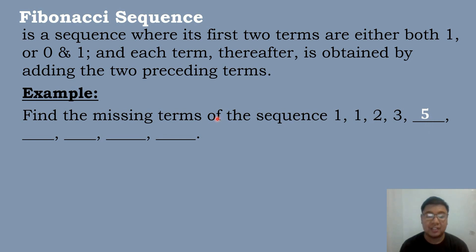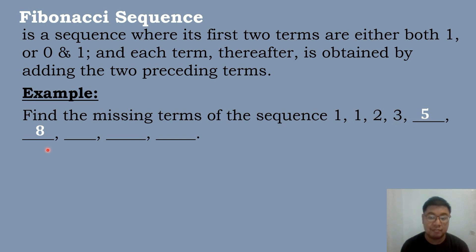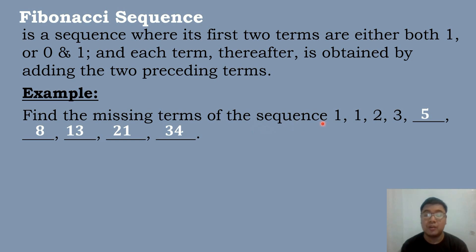To get the value of the sixth term, you will add the value of the fourth term plus the fifth term. So 3 plus 5 will be equal to 8. Then repeat the process: 5 plus 8 will be equal to 13. Then 13 plus 8 will be equal to 21. And then 21 plus 13 will be equal to 34. So the missing terms of the Fibonacci sequence 1, 1, 2, 3 are 5, 8, 13, 21, and 34.